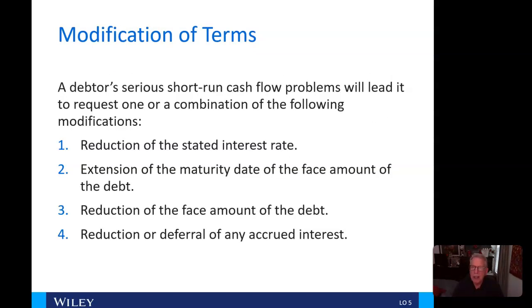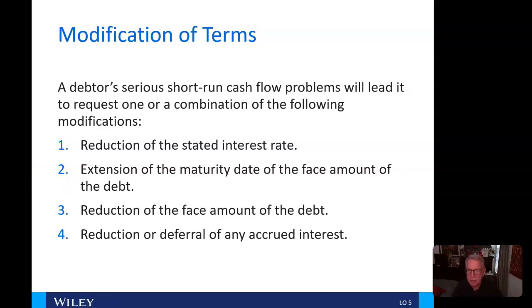For modification of terms, a debtor with serious short-run cash flow problems may request one or a combination of the following modifications: reduction of the stated interest rate; extension of the maturity date of the face amount of the debt; reduction of the face amount of the debt; or reduction or deferral of any accrued interest.